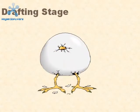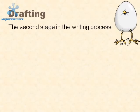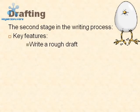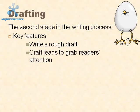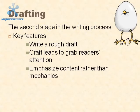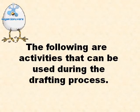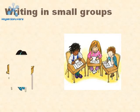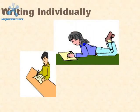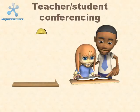The drafting stage. Drafting is the second stage in the writing process. Key features: write a rough draft, craft leads to grab readers' attention, and emphasize content rather than mechanics. Activities include writing a rough draft, writing in small groups, writing individually, and teacher-student conferencing.